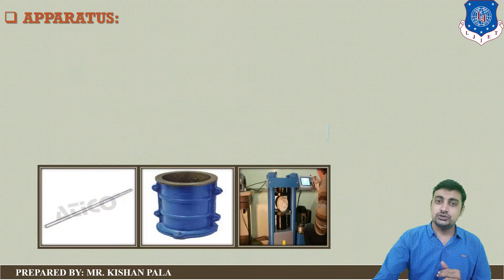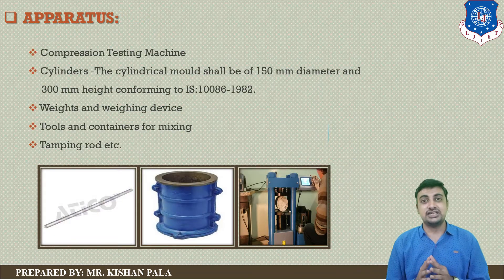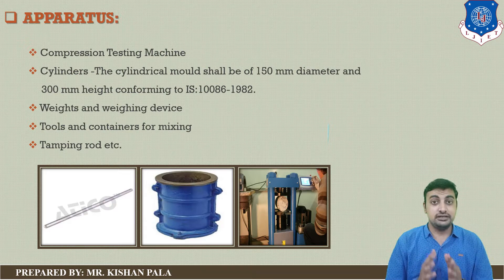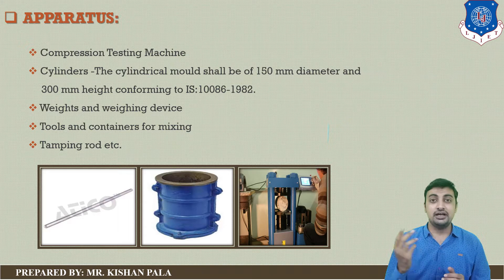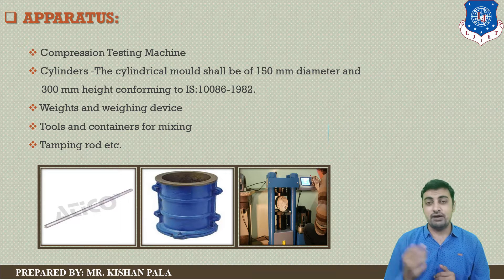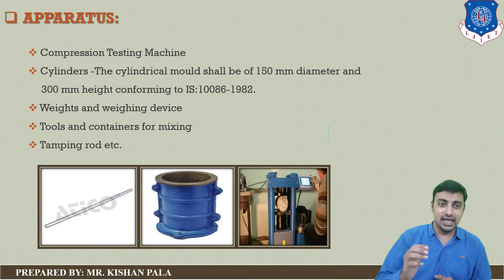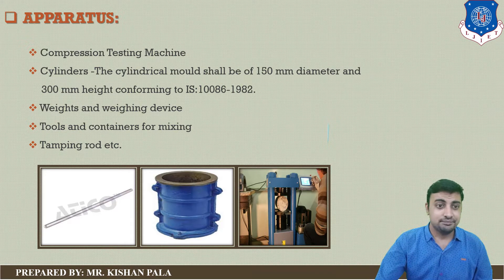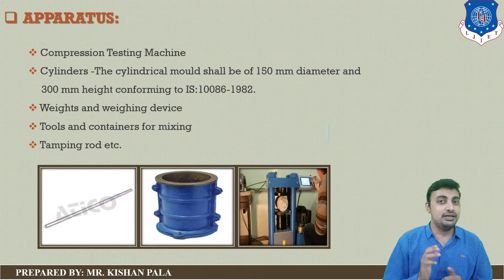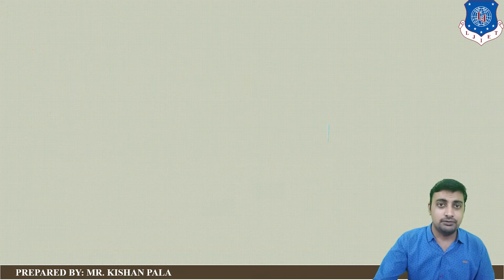Apparatus used to find the tensile strength of the concrete mass: we require a compression testing machine, a cylindrical mould with dimensions of 150 mm diameter and 300 mm height, a weighing machine, and tools for mixing and a tamping rod.